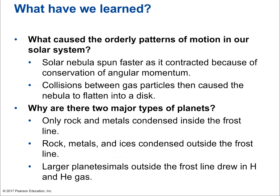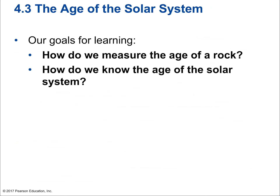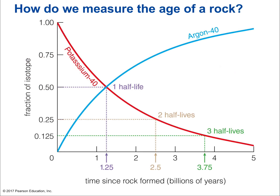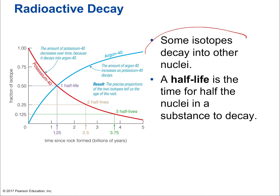Now let's talk about the age of the solar system — how do we know how old it is? How do we measure the age of a rock? We use atomic decay and the fact that it occurs in half-lives. Some isotopes decay into other nuclei: certain naturally occurring elements are unstable and change into other elements over time. Radioactive waste from nuclear power plants consists of unstable elements that decay, some in seconds, others over billions of years.